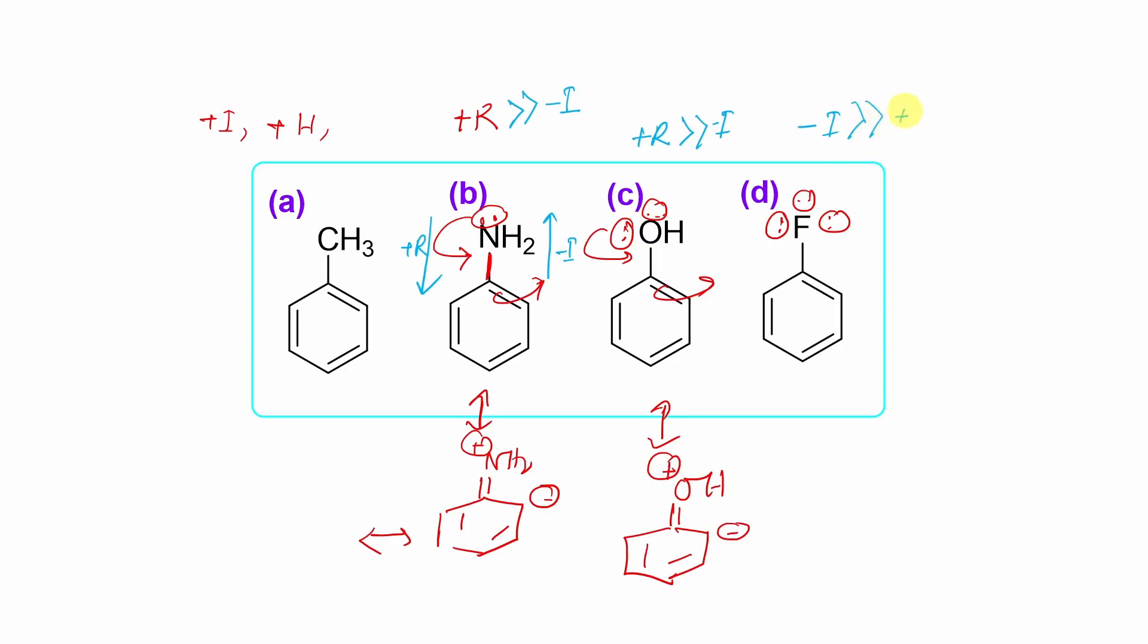But if you look at this fluorobenzene, for halobenzene, this is the truth: in this case minus I is dominated over plus R, means actually they are not at all donating, they are withdrawing. So halogens, that's why it is called halogens are ortho-para orienting but deactivating. Why deactivating? Because through this minus I effect, they are pulling some electron density from the benzene nucleus, which will result in the decrease in reactivity of this benzene nucleus towards any electrophile by aromatic electrophilic substitution.